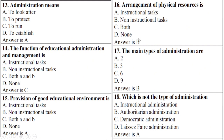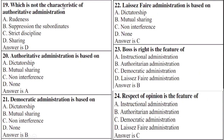The main types of administration are — right option is B: three types of administration. Which of the following is not a type of administration — right option is A: contract is not a characteristic.